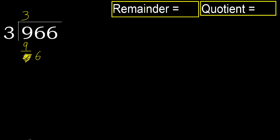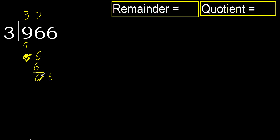Eliminate 0. 6 — 3 multiplied by 3 is 9, it is greater. 3 multiplied by 2 is 6, it is not greater. Subtract. Next. Eliminate 0.